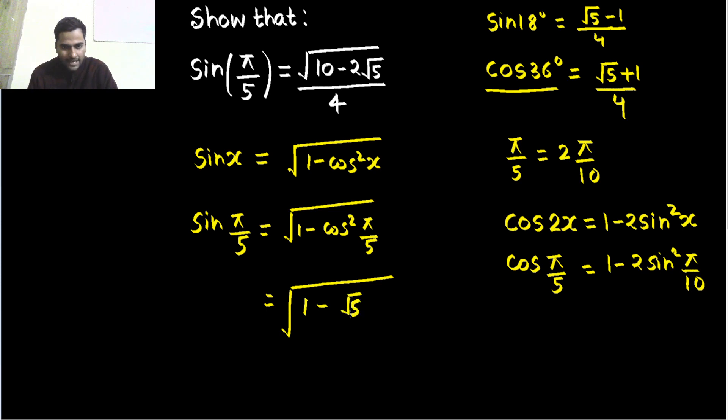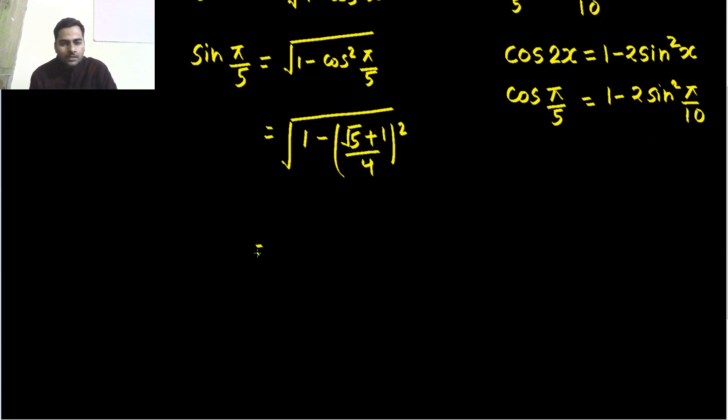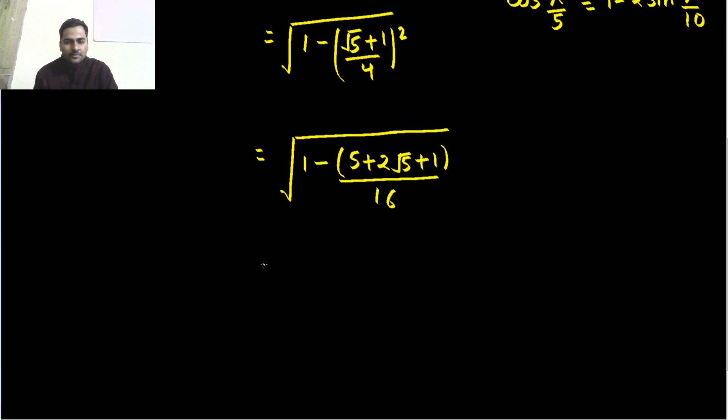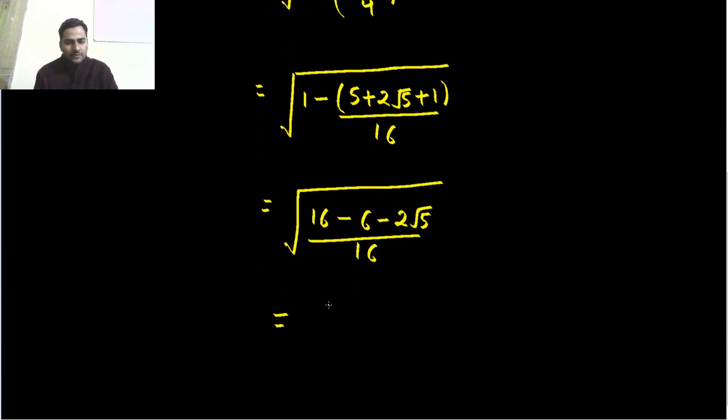1 minus √5+1 divided by 4 whole square. So under the root, 1 minus (5 + 2√5 + 1) divided by 16. Let's take the LCM. Under the root, 16 minus 5+1 is 6 and minus 2√5 divided by 16. This 16 can come out obviously of the root. So root is in numerator only, 16-6 is 10 minus 2√5 divided by 4. This is the value of sin(π/5) or sin 36.